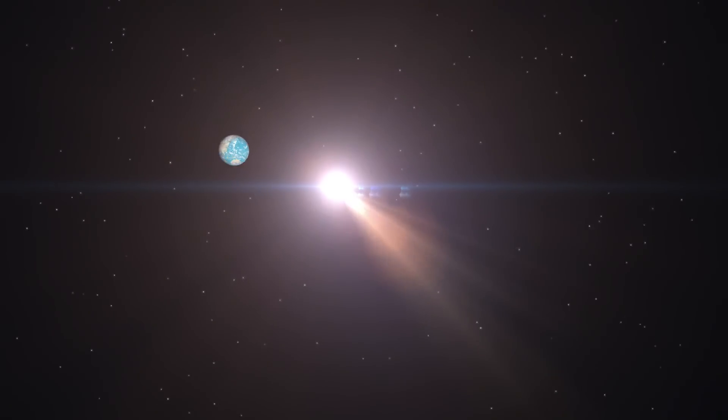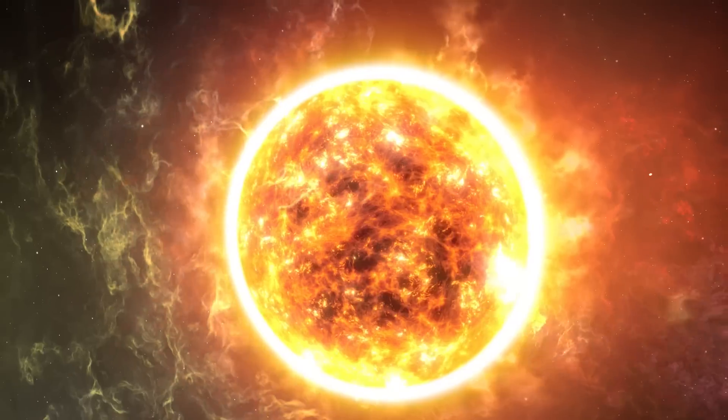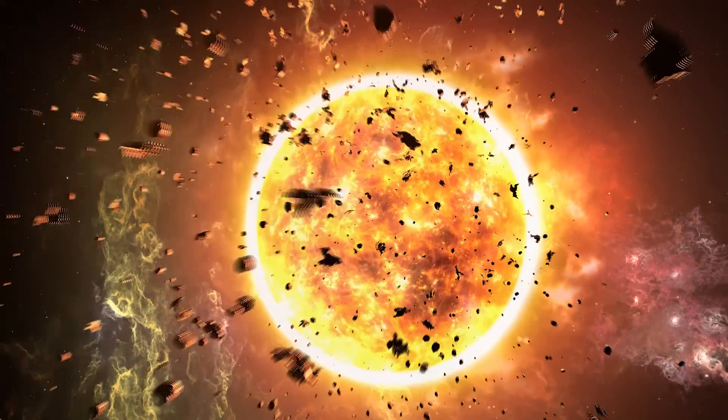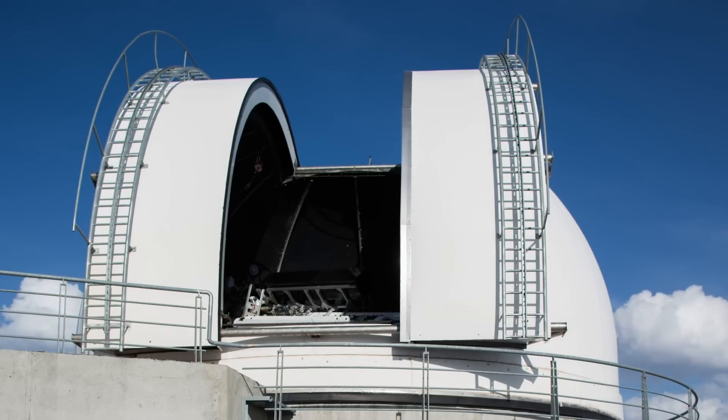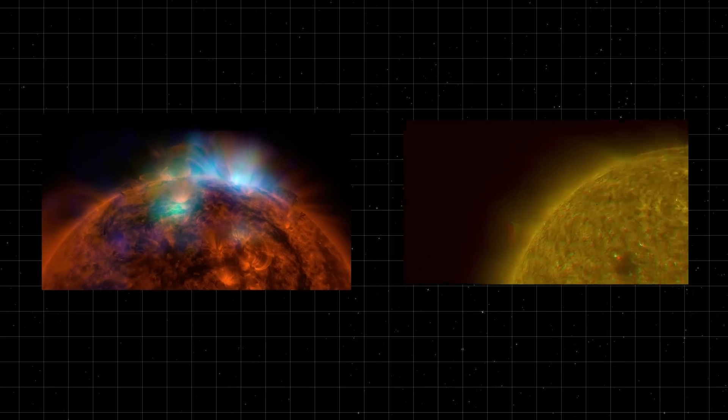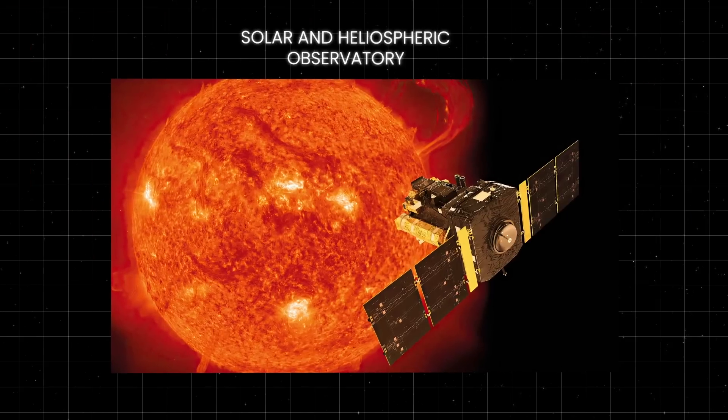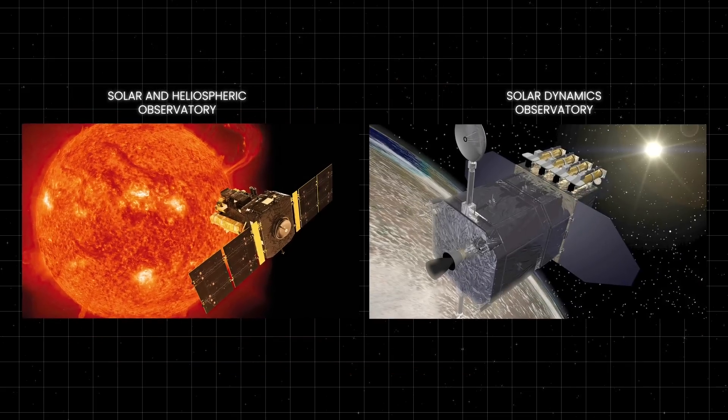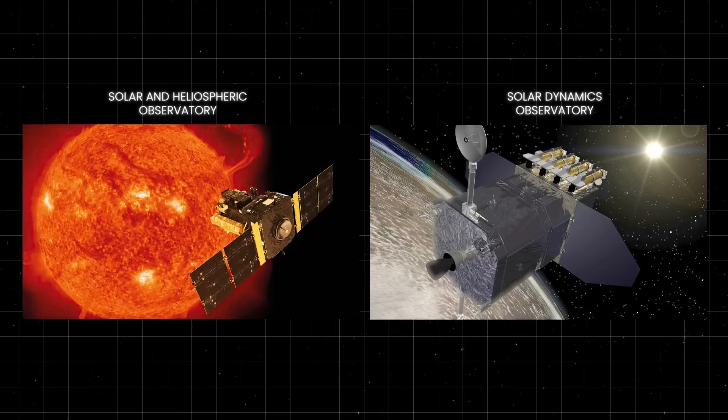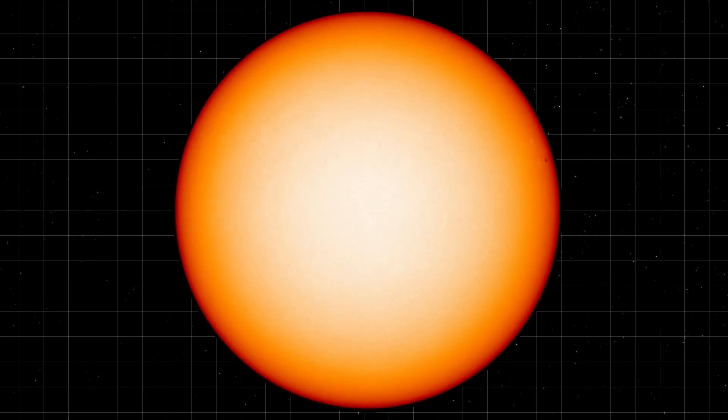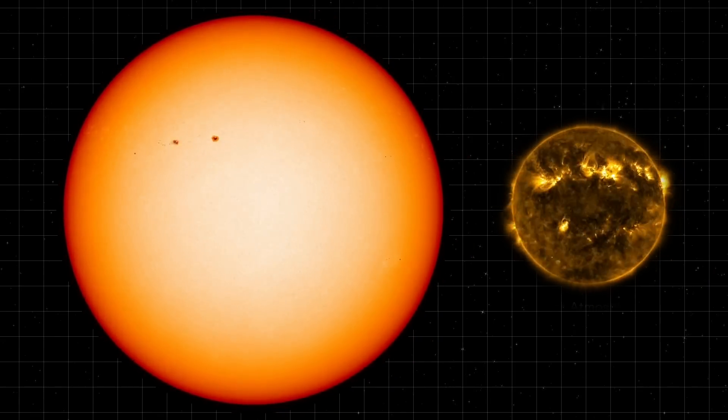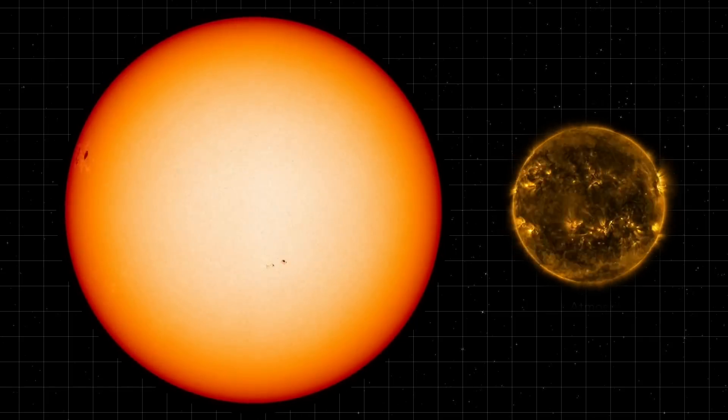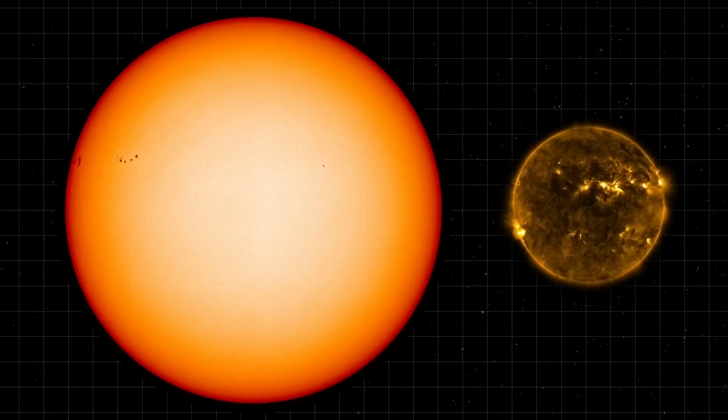So do we know when the Sun's magnetic field is about to reverse? Scientists monitor the Sun's magnetic activity using a variety of tools and techniques. Observatories equipped with powerful telescopes, both on Earth and in space, provide detailed images of the Sun's surface and its sunspots. Instruments like the Solar and Heliospheric Observatory and the Solar Dynamics Observatory measure the Sun's magnetic field and track changes over time. One key indicator of an impending magnetic reversal is the behavior of sunspots. During the solar maximum, sunspots appear more frequently and are more pronounced. As these sunspots migrate towards the Sun's equator, they signal that the magnetic field is becoming more unstable and is preparing to flip.